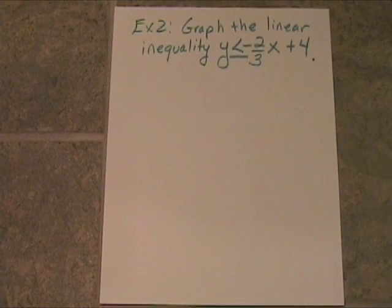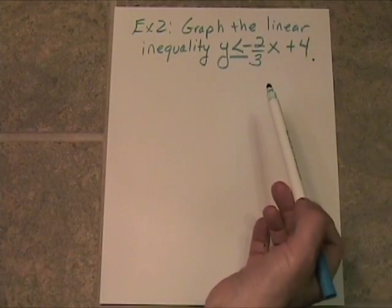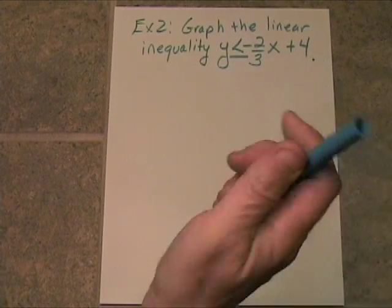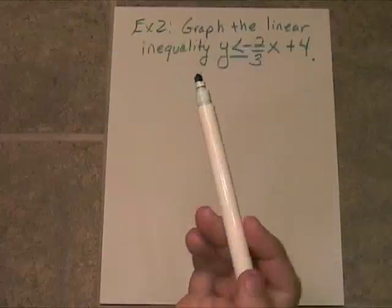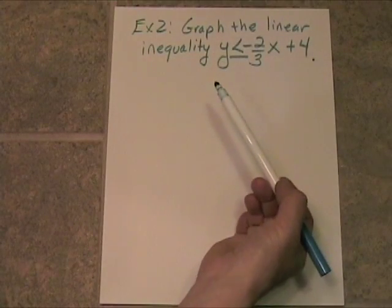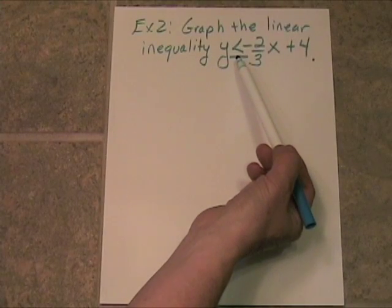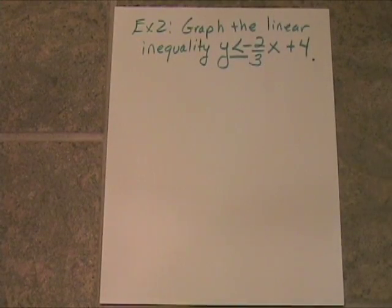Example 2. Graph the linear inequality y is less than or equal to negative 2 thirds x plus 4. We're going to think of this as though it said y equals negative 2 thirds x plus 4. And we'll graph our boundary line. And in this case, it's going to be a solid boundary line, because it's not strictly less than. It's less than or equal to. And then we'll decide whether we shade above that diagonal line or below.